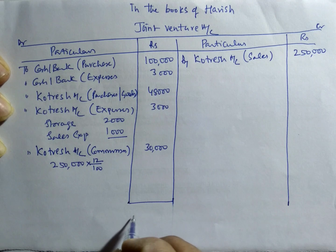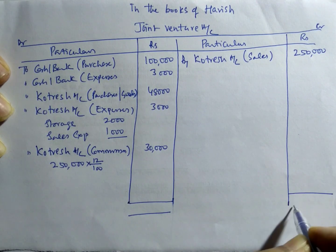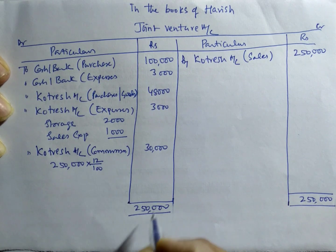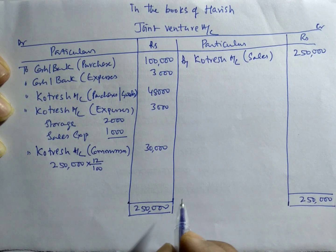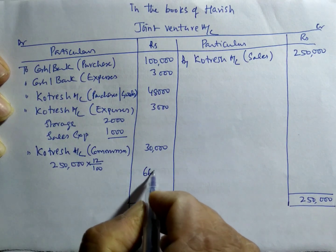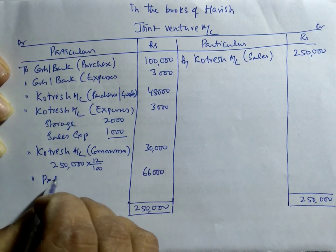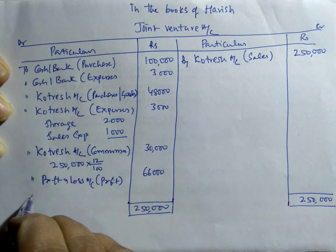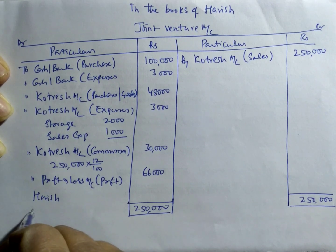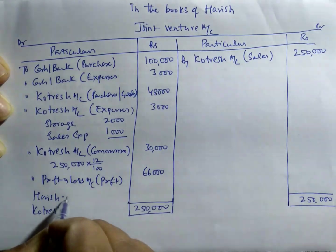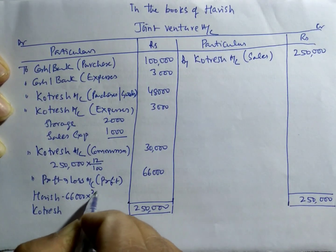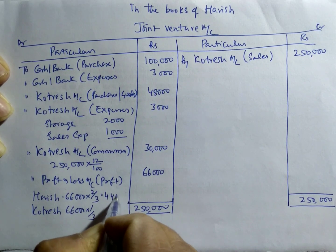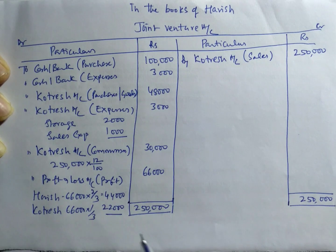After this, no other transactions are given. So we must close this by balancing — the Rs. 2,50,000 credit side — and find out the difference. The difference will be Rs. 66,000, which is termed as profit. It must be distributed among Harish and Kotresh in their profit sharing ratio: Harish gets 2/3, so Rs. 44,000, and Kotresh gets 1/3, so Rs. 22,000.